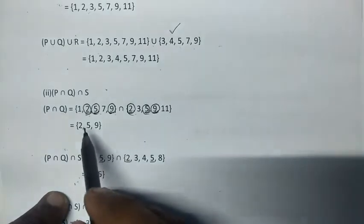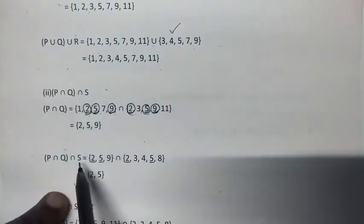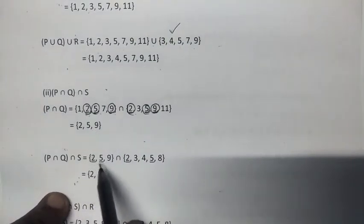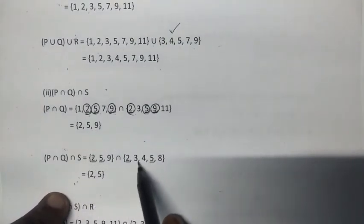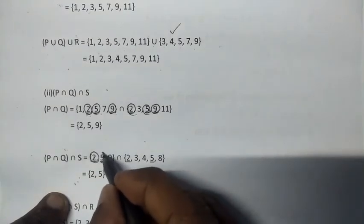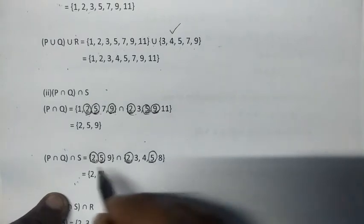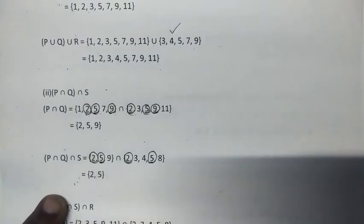Now P intersection Q intersection S. We have 2, 5, 9. S has 2, 3, 4, 5, 8. Common elements are 2 and 5. So the answer is {2, 5}.